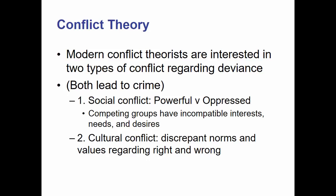Modern conflict theorists are interested in two types of conflict regarding deviance: social conflict and cultural conflict, and both of these lead to crime. At the core of conflict theory, we are interested in how powerful people oppress those they oppress. Competing groups have incompatible interests, needs, and desires. The rich want to stay rich, maintain their wealth and power. The poor want to get rich and have some of that power. Those are competing interests that are not compatible with each other, and that is one type of conflict that can lead to crime.